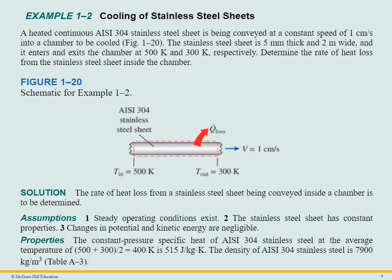So let's take a look at an example. Let's suppose we have a heated continuous stainless steel sheet. And it's moving at a speed of one centimeter per second. The stainless steel sheet is five millimeters thick and two meters wide, and it enters and exits the chamber at 500 K and 300 K respectively. So it's coming in at 500 K and then going out is at 300 K. We want to find the rate of heat loss from the stainless steel.